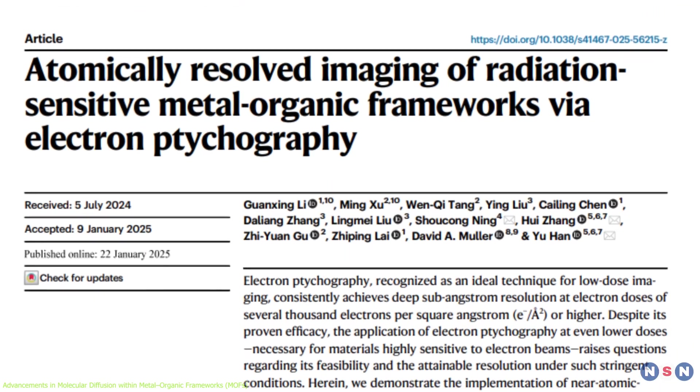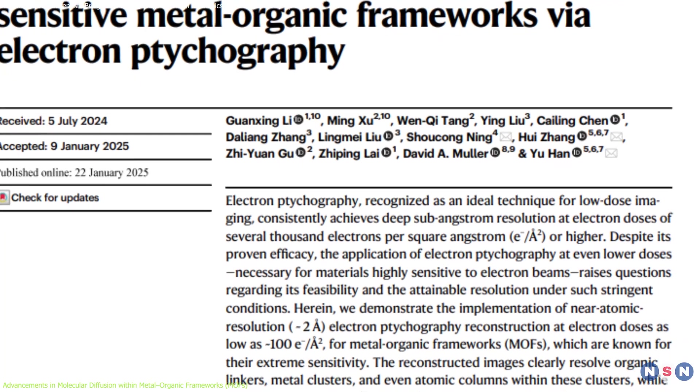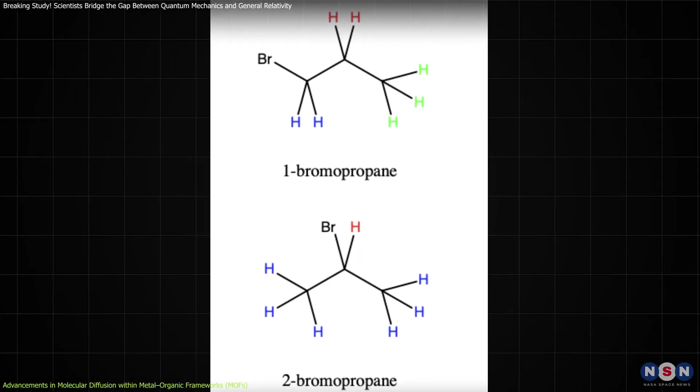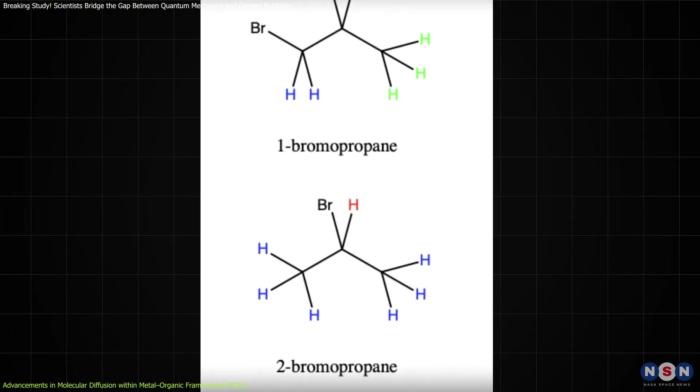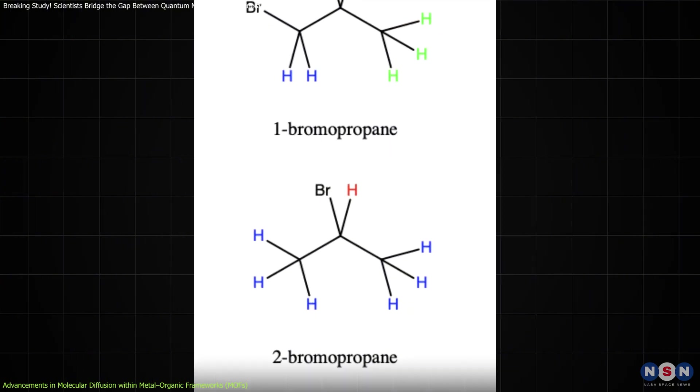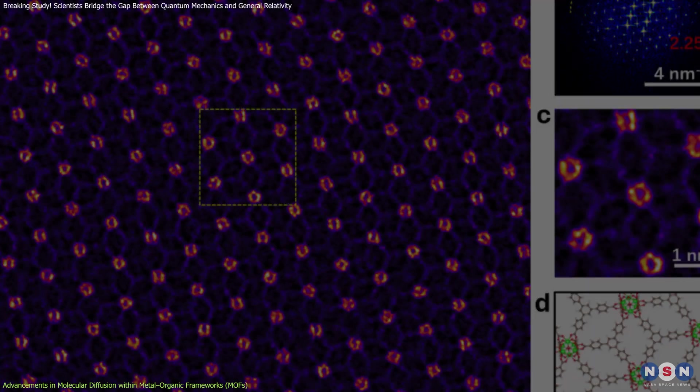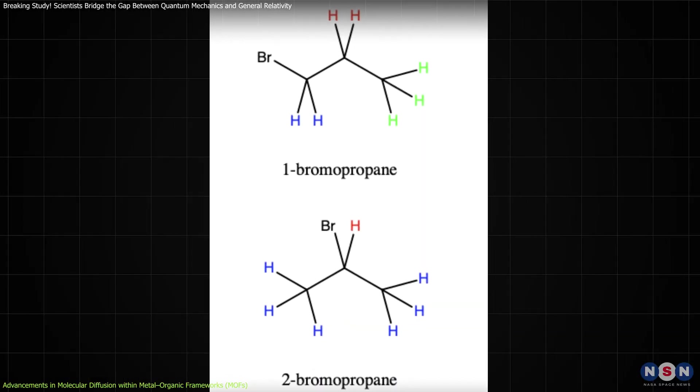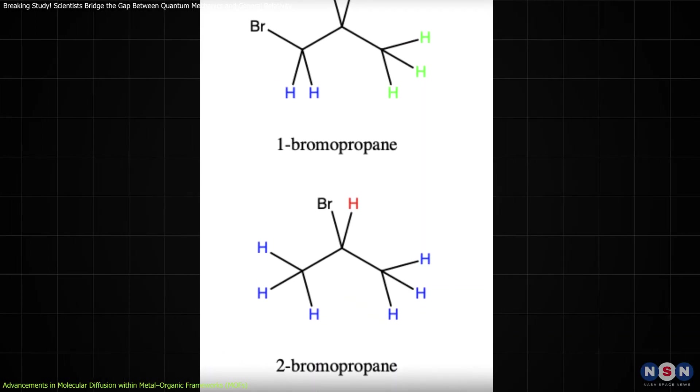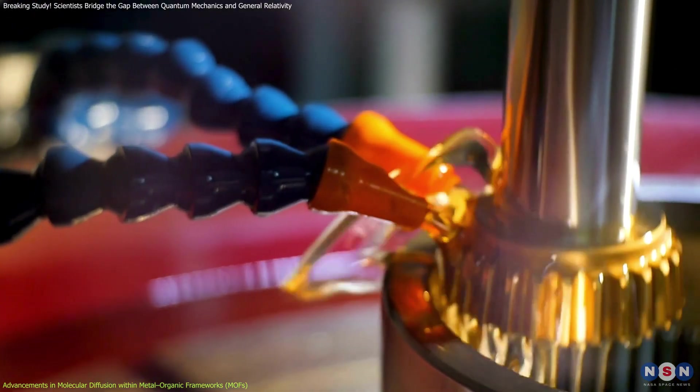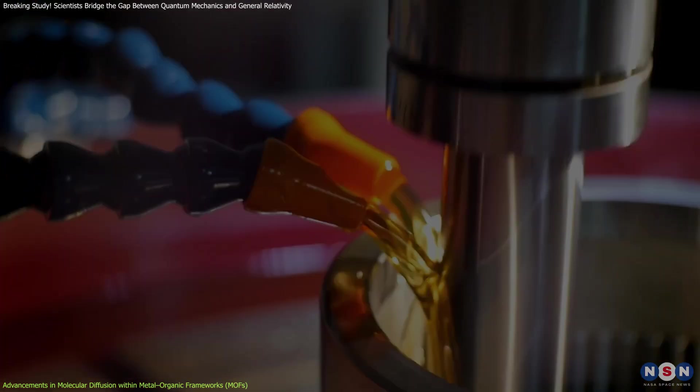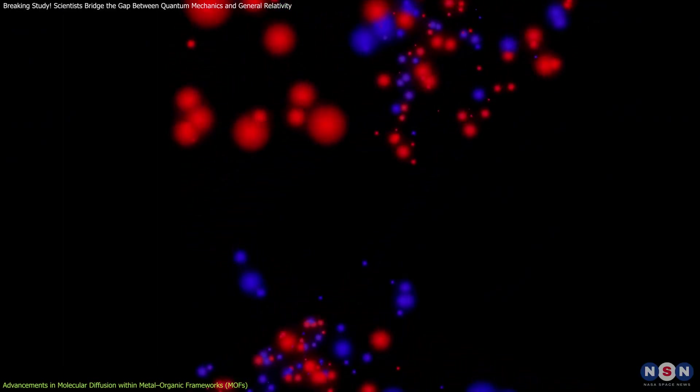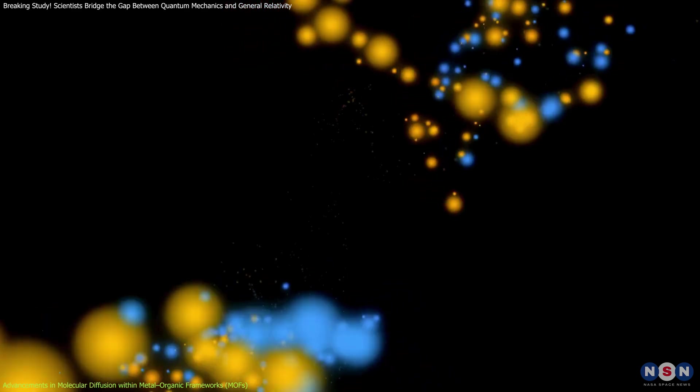A study recently published in Nature Communications has taken a significant step towards resolving this challenge. The researchers investigated the diffusion behavior of two brominated alkane isomers, one bromopropane and two bromopropane, using a specially designed MOF thin film. These isomers, which share the same chemical formula but differ in structure, are critical feedstocks in the manufacture of lubricants, pesticides, and PVC. Efficiently separating these molecules is a challenging yet vital task for many industries.